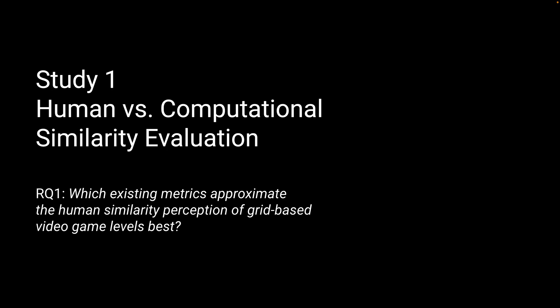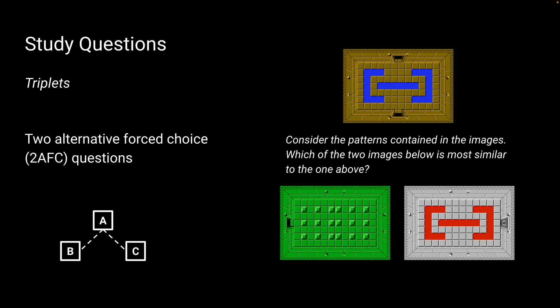Let's start with our first study: human versus computational similarity evaluation. These are our study questions. We use a conventional approach to alternative forced choice for our questions, and this has shown to be the most robust judgment type. We call these triplets. Here's an example on the right-hand side. We ask the participants to consider the patterns contained in the images, and we want to know which of the two images below is most similar to the one above.